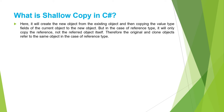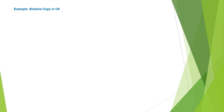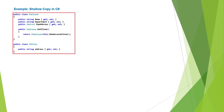Let us understand shallow copy in C# with an example. Please have a look at the employee class, which has three properties: Name and Department are value types, whereas EmployeeAddress is a reference type of type Address. The Address class has a single Address property. The Employee class also has a GetClone method that uses the MemberwiseClone method to create a clone object of the current instance.